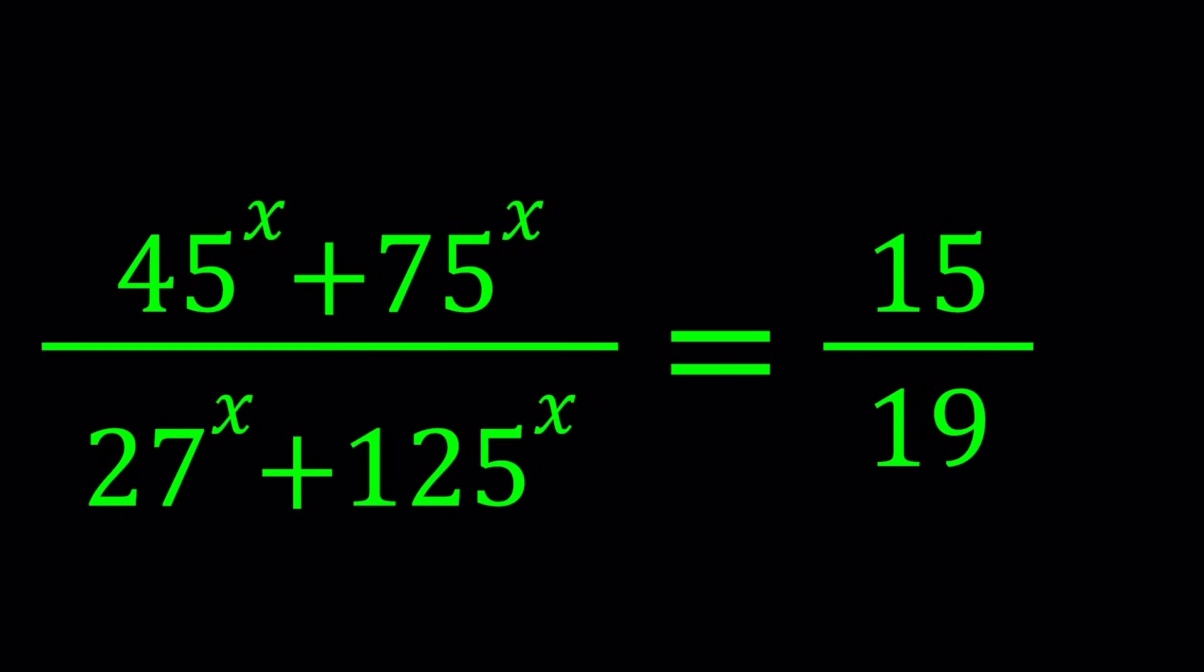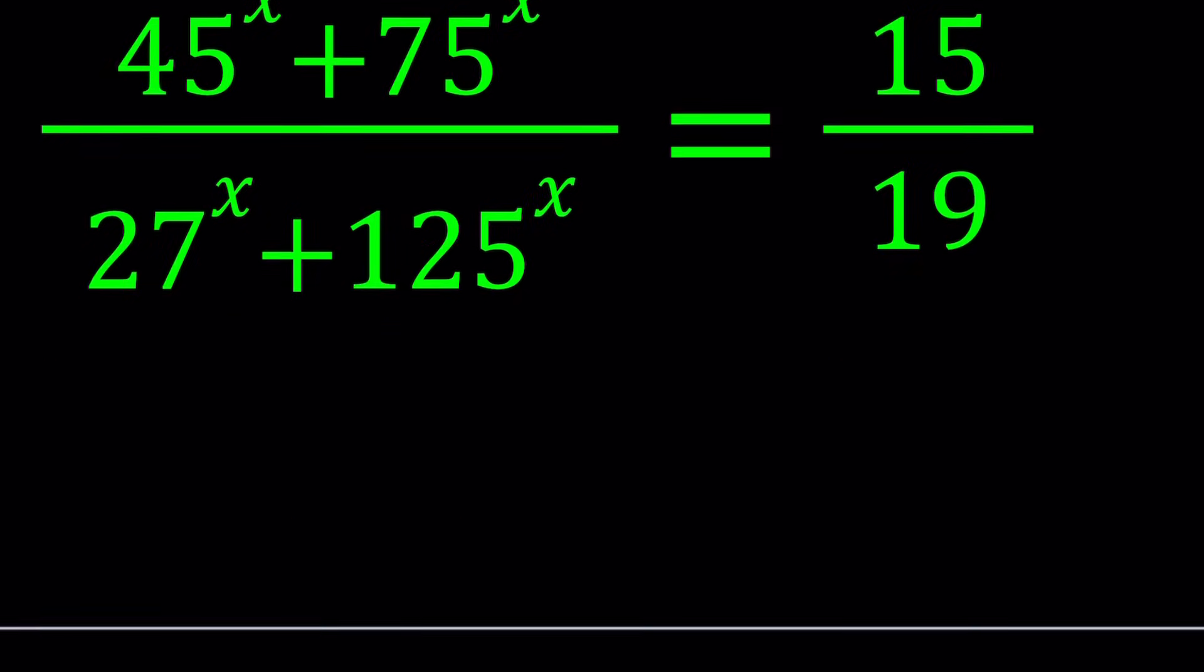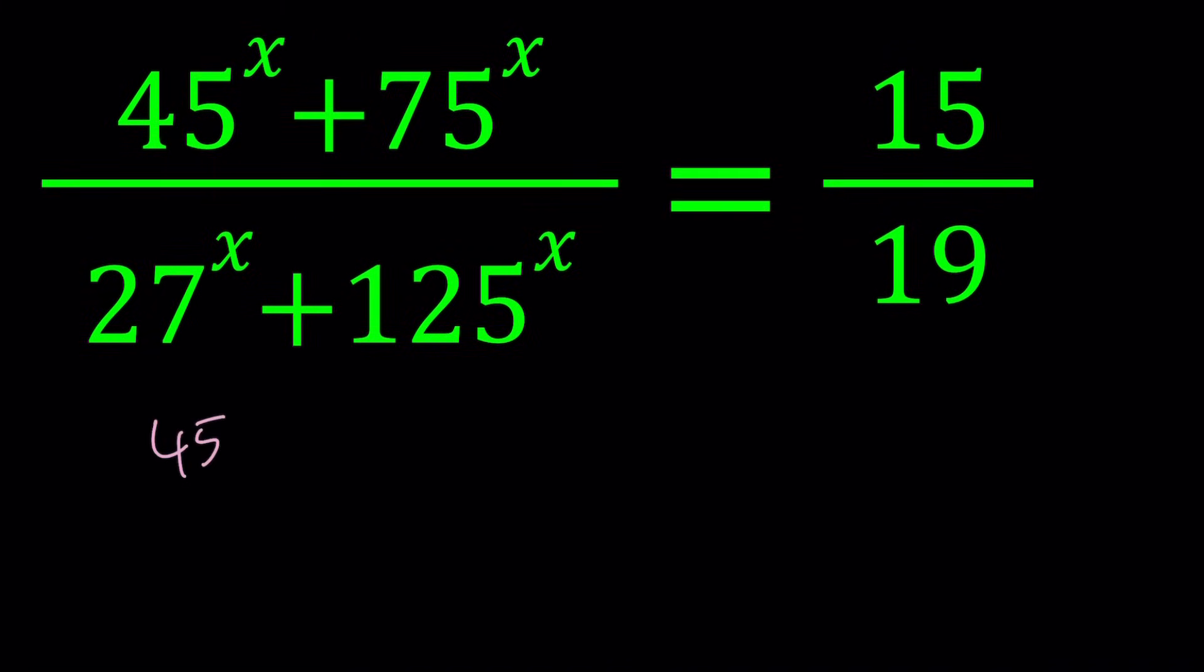To be able to solve this equation, I want you to notice first of all that 45 is made up of 5 times 9, 75 is 3 times 25, 27 is 3 to the third power, and 125 is 5 to the third power. I'm talking about the prime factorization of these numbers, and what they have in common is they're made up of 3s and 5s. Let's write them like 45 is 3 to the second times 5, 75 is 3 to the first times 5 to the second, 27 is 3 to the third, and 125 is 5 to the third power.